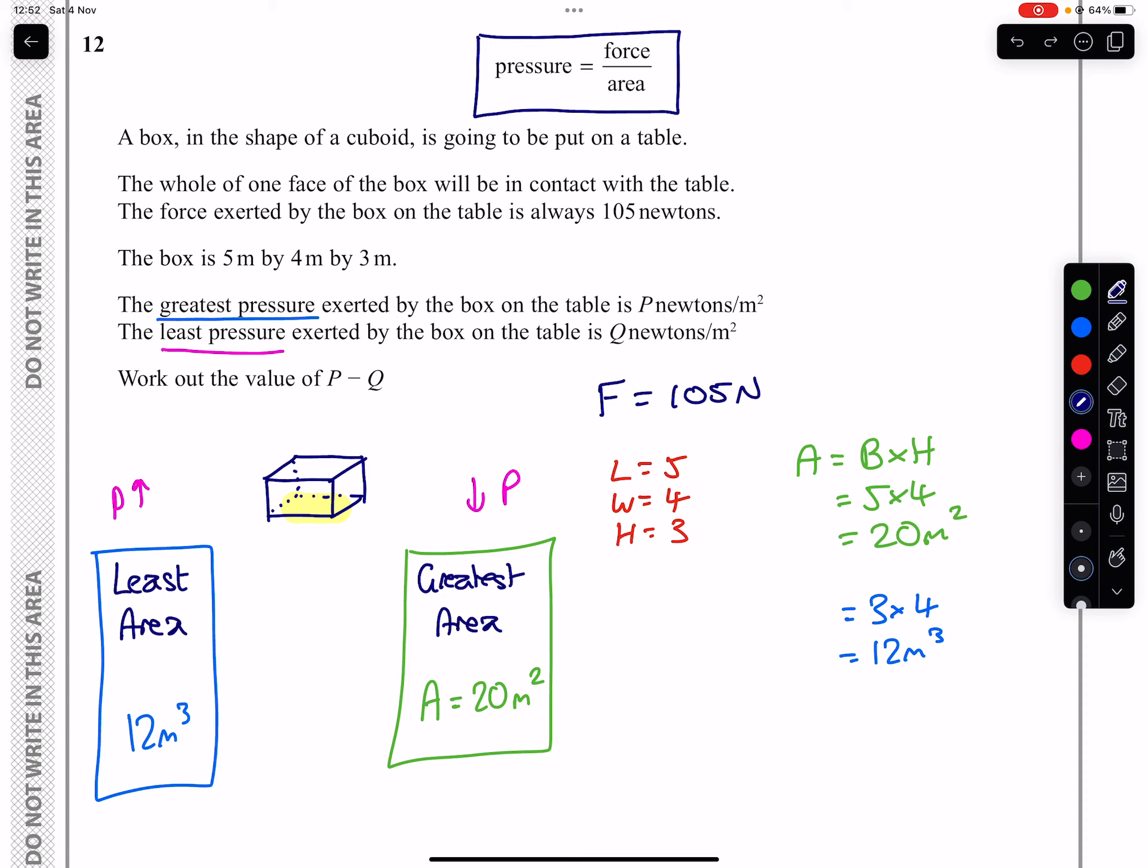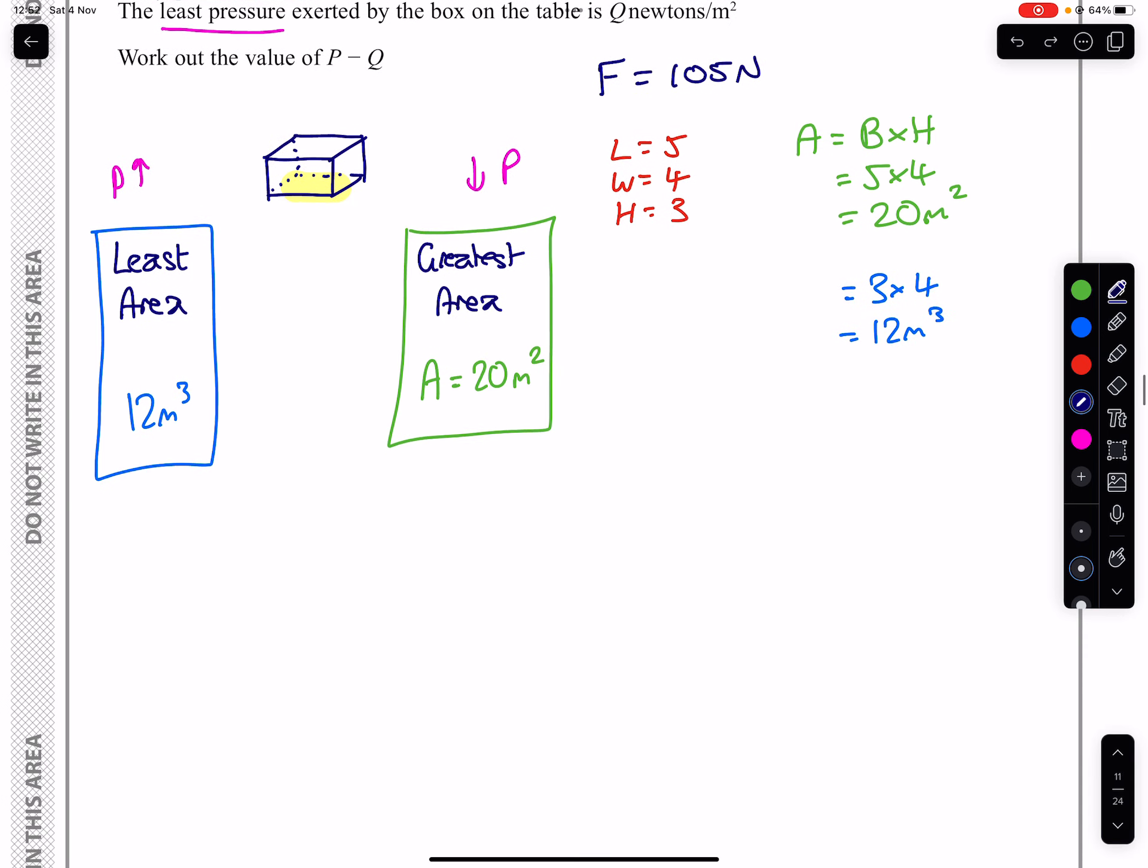So we take our force of 105 newtons, which we were given, and we divide it by these areas. So 105 divided by 12 is going to give us the pressure when we're using the least area. And the 105 divided by 20 is going to give us the pressure when we use the greatest area.